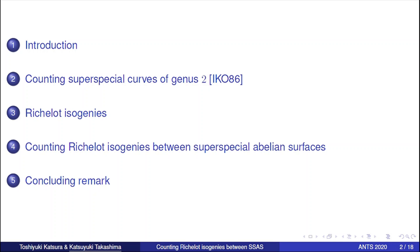This is the agenda of my talk. First, I will briefly review some background materials from cryptography, and I will introduce our result, and then briefly review a classical result on counting super-special genus-2 curves. And then I will define Richelot isogenies, and our main target is counting such isogenies between super-special abelian surfaces.